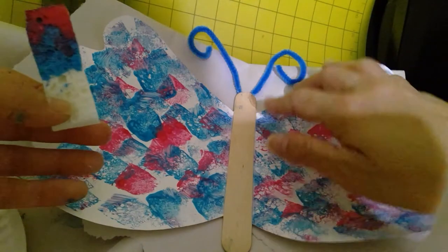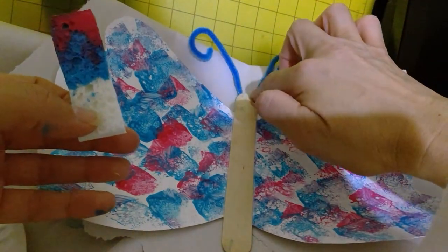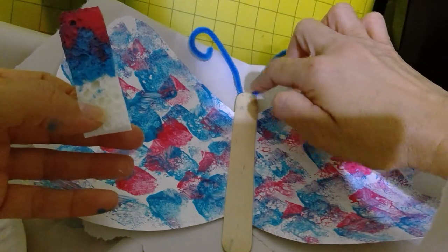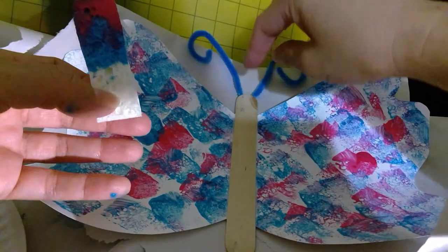And so far, this is how it looks with antennas on. Remember to glue the antennas on the back of the craft stick.